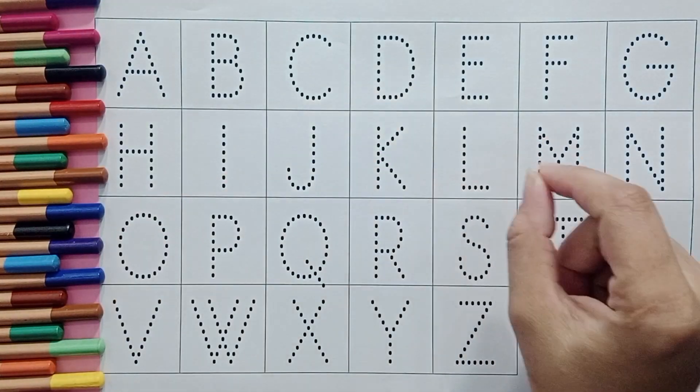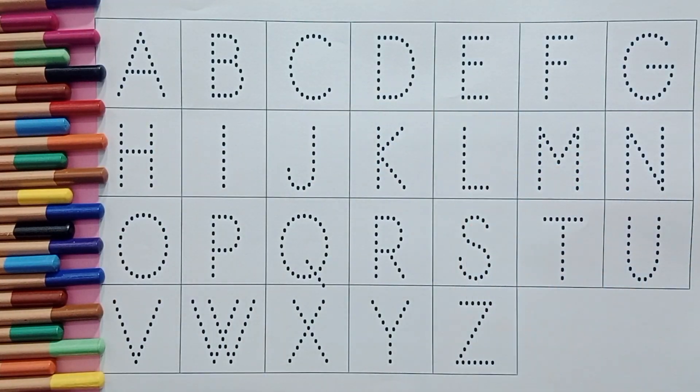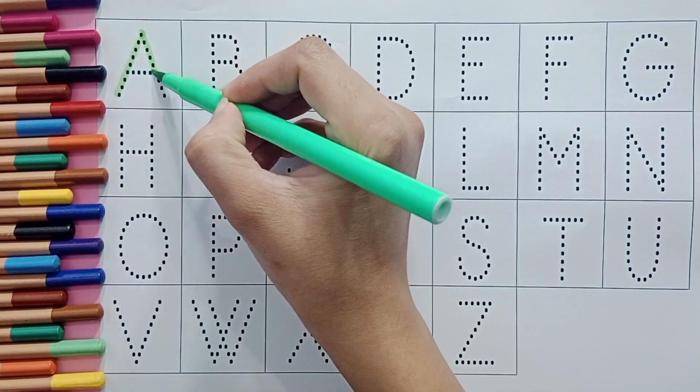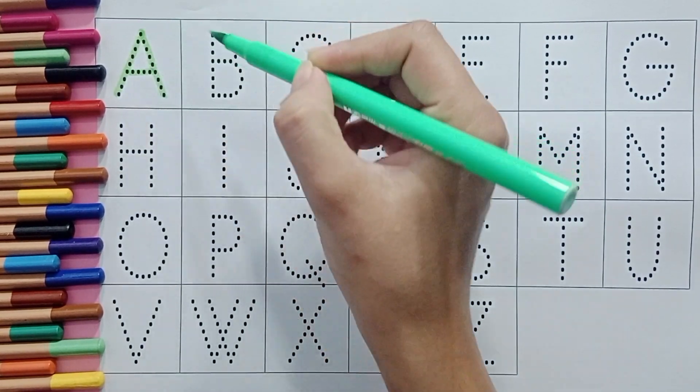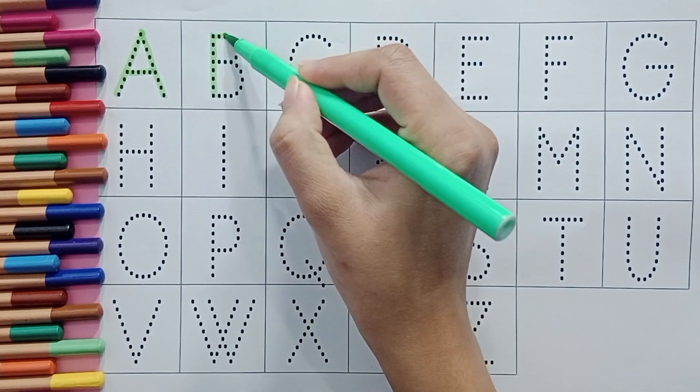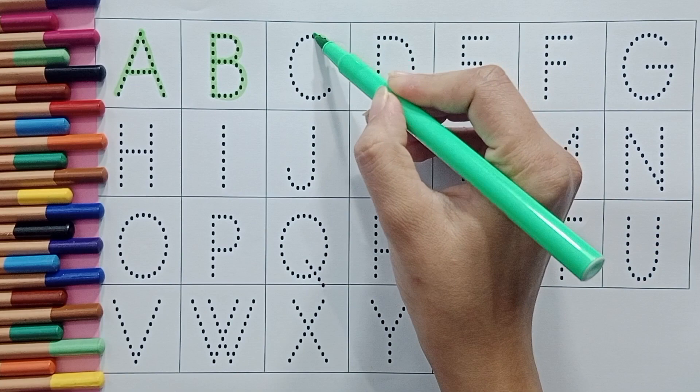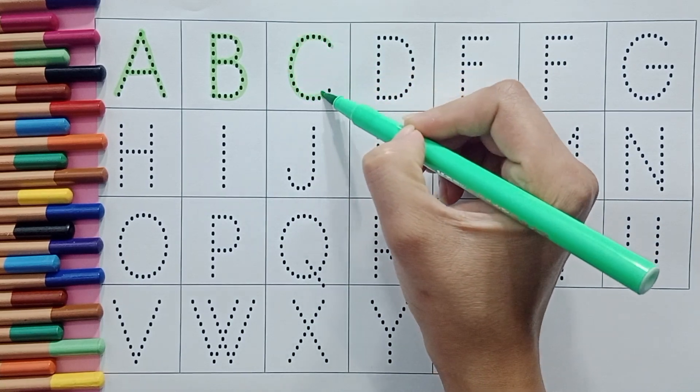Hello, kids. Let's write A, B, C. Green color. A. A for apple. A for apple. B. B for ball. B for ball. C. C for cat. C for cat.